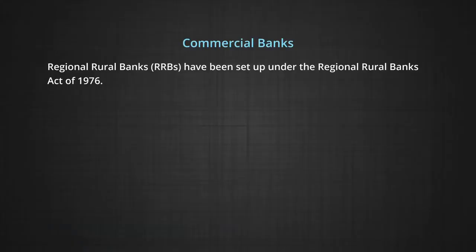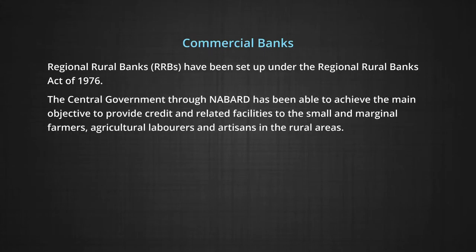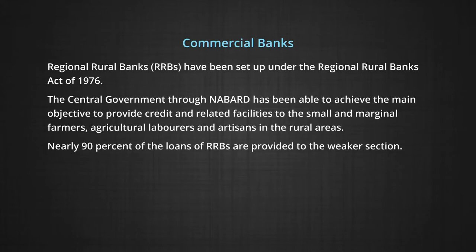Regional Rural Banks (RRBs) were set up under the Regional Rural Banks Act of 1976. The central government through NABARD has achieved the main objective of providing credit and related facilities to small and marginal farmers, agricultural laborers, and artisans in rural areas. Nearly 90 percent of the loans of RRBs are provided to the weaker sections, at lower rates of interest, while giving higher rates on deposits.